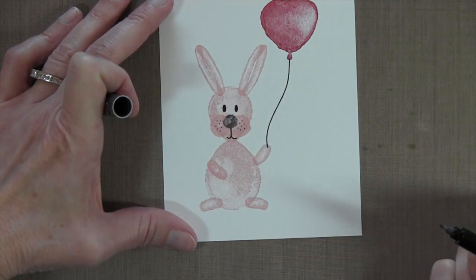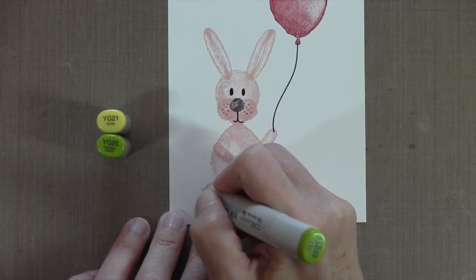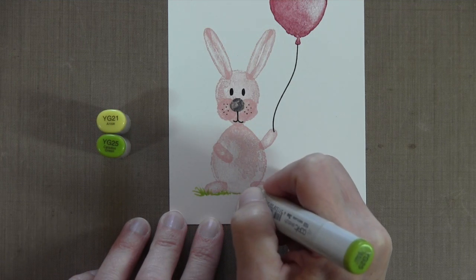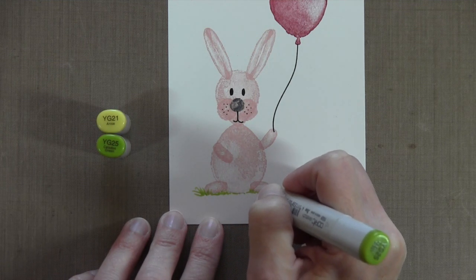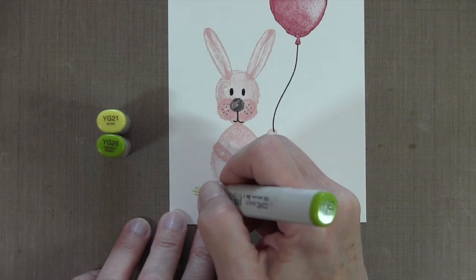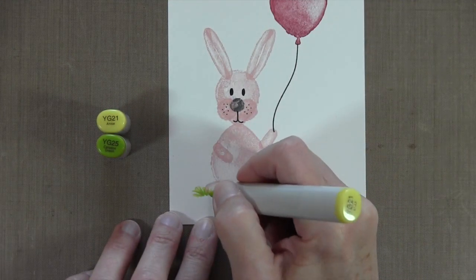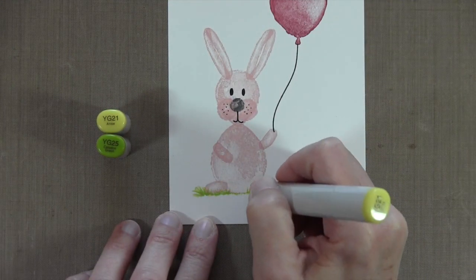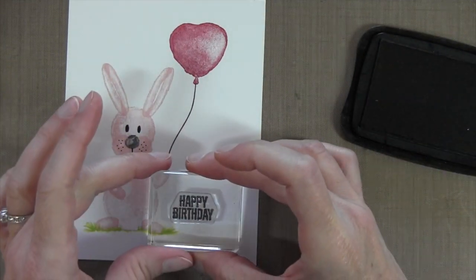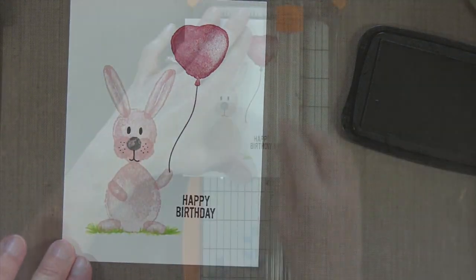Right now my bunny looks like he's sort of floating and I don't really want him to look like he's floating. I'm going to ground him by adding some grass at the bottom. I've got YG21 and YG25 Copic markers. I'm just flicking upward to create some grass. If you don't have Copic markers you could do water-based markers. I would mute them a little bit with a blender pen. Or you could use your Zig watercolor markers. Really just use anything to add some color to the bottom so it doesn't look like he's floating. And then the Happy Birthday which comes with the set along with a couple of other sentiments, this is Memento again.